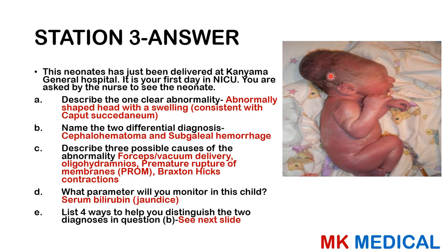This is an abnormally shaped head with swelling, consistent with what we call caput succedaneum. The two differentials include cephalhematoma as well as subgaleal hemorrhage. This can result from forceps or vacuum delivery, oligohydramnios, premature rupture of membranes, or Braxton-Hicks contractions. The parameter you want to monitor is serum bilirubin, because there is a risk of jaundice — the accumulated blood gets broken down, releasing bilirubin, which can deposit in the skin and mucous membranes.